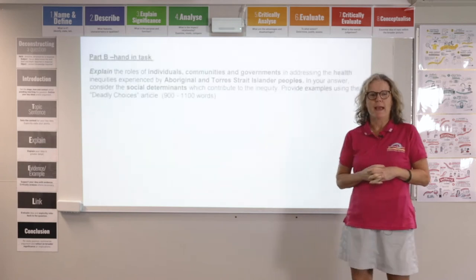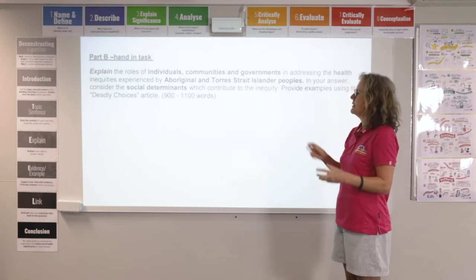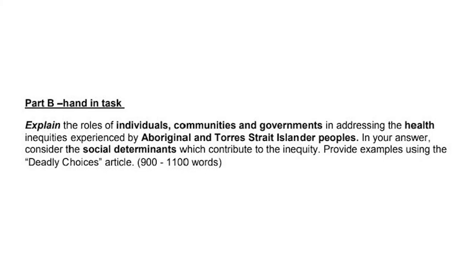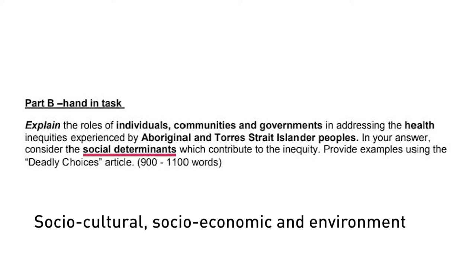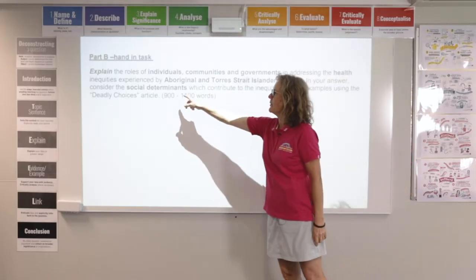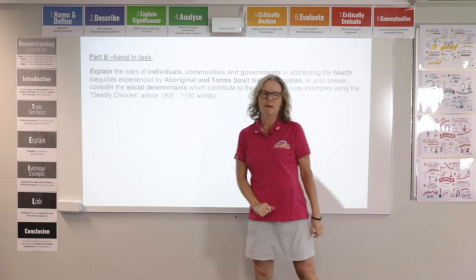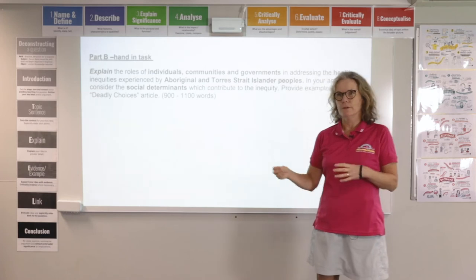Now let's have a quick look at part B — the hand-in task. The difference in this task from the one you did for homework is that you must consider the social determinants. The social determinants — socio-cultural, socio-economic and environmental — are the social determinants of health; we're not looking at individual determinants here. You need to consider those and make sure you use the Deadly Choices article in your response.